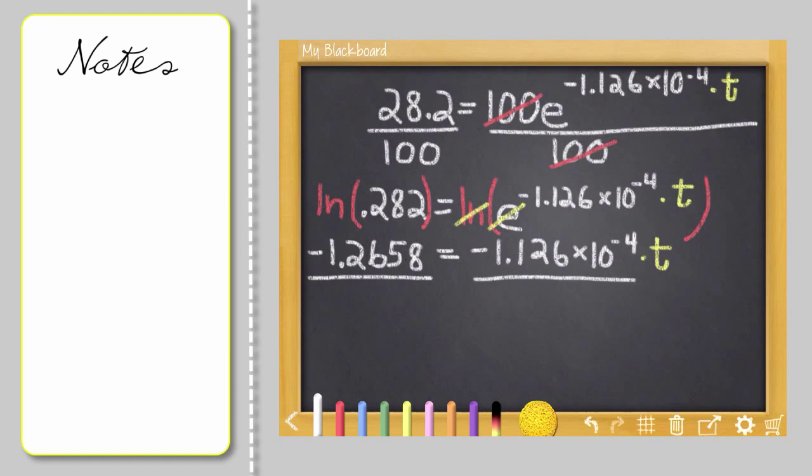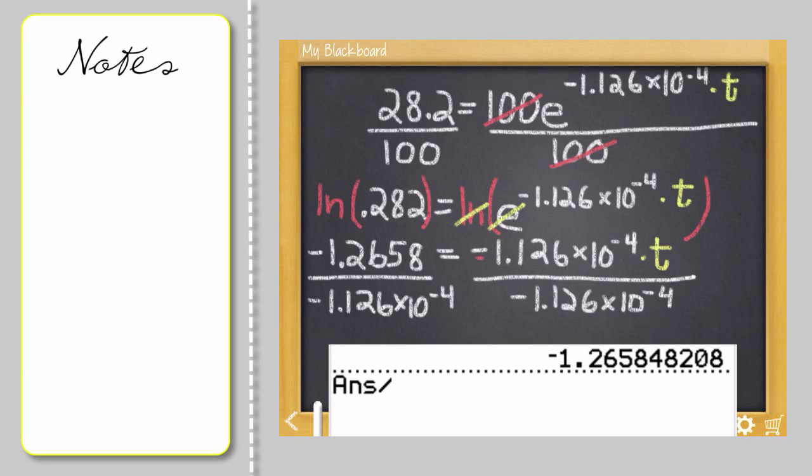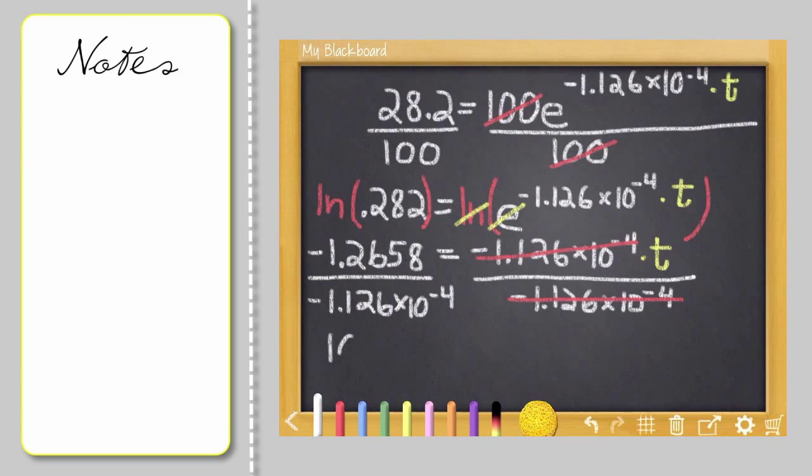And then we can divide both sides by negative 1.126 times 10 to the negative fourth. Now remember, this number was inside the variable R on the calculator. I'm going to round the result to the nearest hundred years. Our mastodon died about 10,400 years ago.